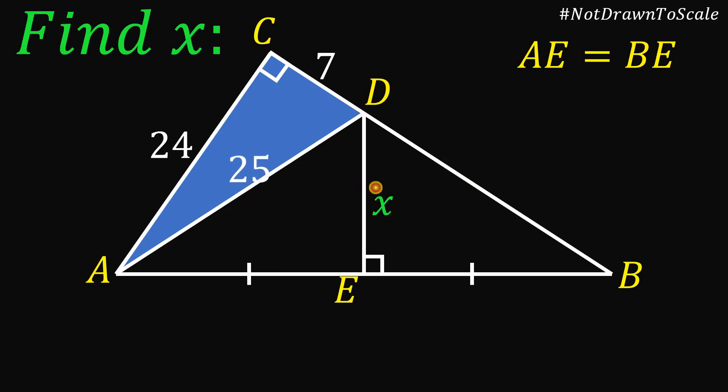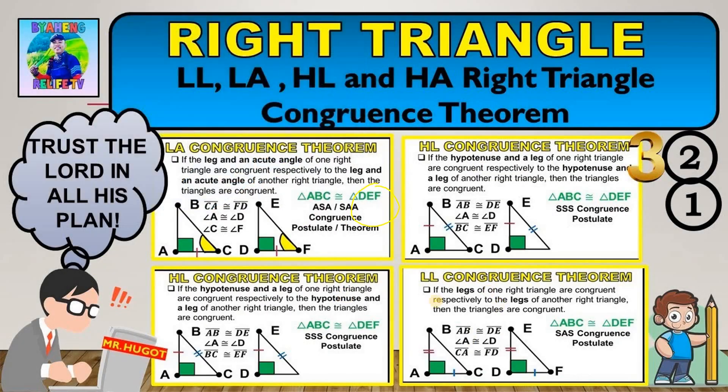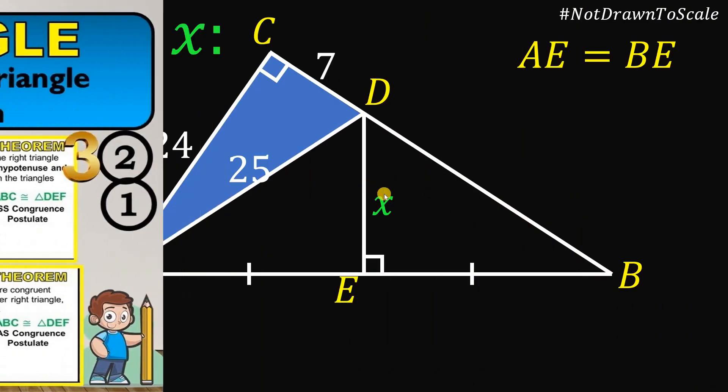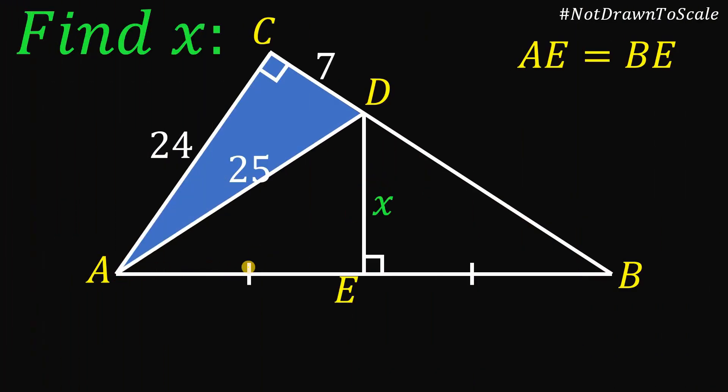All right. But again, our goal is the value of X and not the value of AD. Another concept that we can use to answer this is what we call the leg-like congruence theorem. If the legs of one right triangle are congruent respectively to the legs of another right triangle, then the triangles are congruent. So using the leg-like congruence theorem, take note that segment AE and segment EB must be equal, and DE is equivalent to DE by reflexive property.